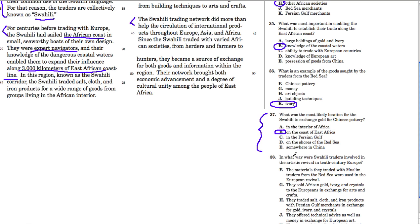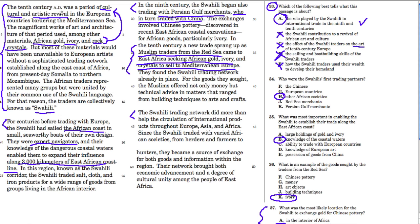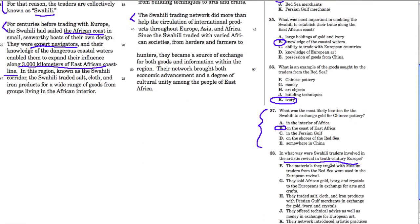Question 38 asks in what way were Swahili traders involved in the artistic revival in 10th century Europe. That goes back to the opening paragraph — the revival happened because European countries were able to get these supplies from the Swahili and use them to help the artistic and cultural revival. Answer F says 'the materials they traded with Muslim traders from the Red Sea were used in the European revival' — that's correct.